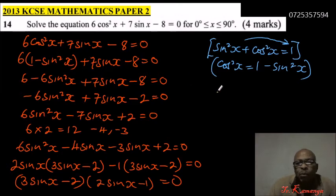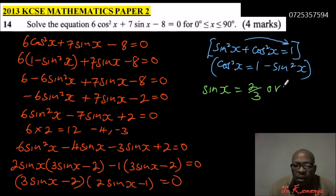With that, we can say that if the product of these 2 equals 0, then it means 3 sin x - 2 = 0. So if you take 2 to the other side, you find that sin x = 2/3. Or when you take 1 to the other side here, you will be left with 2 sin x = 1. You divide both by 2, you get 1/2.